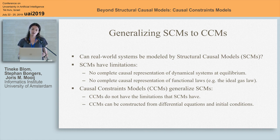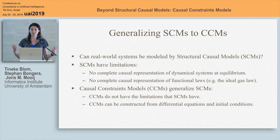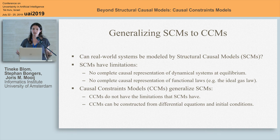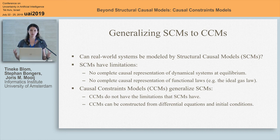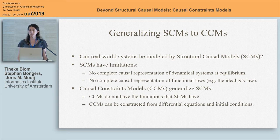In particular, it's not always possible to have a complete causal representation of dynamical systems at equilibrium. This is an abstraction of a dynamical system describing how a system changes over time to just modeling its equilibrium instead. We try to make a link between the world of dynamical systems and causal models. We also point out that there's no complete causal representation of functional laws, like the ideal gas law — relations between variables that always hold. As a solution, we propose causal constraints models as a generalization of SCMs, and we show that they don't have the same limitations.